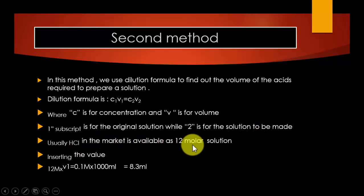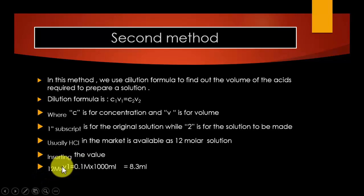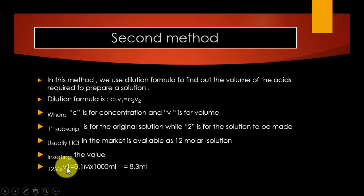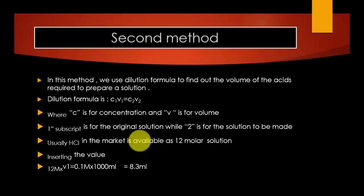Commercial HCl in the market is a 12 molar solution. Inserting the values: C1 is 12 molar (the original solution), V1 is the volume to be taken from the original bottle, V2 is 1000 mL (the one-liter flask), and C2 is 0.1 molar (the molarity of the solution to be made). Solving, it again comes out to be 8.3 mL.